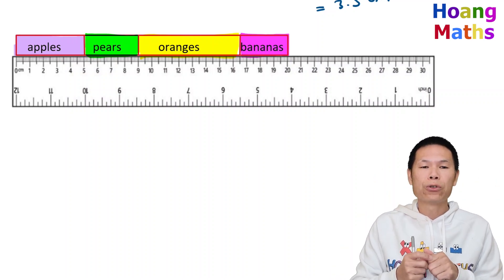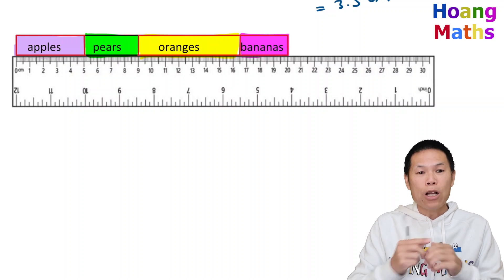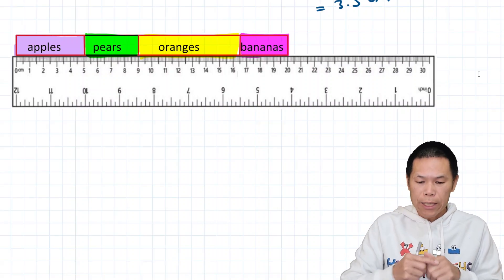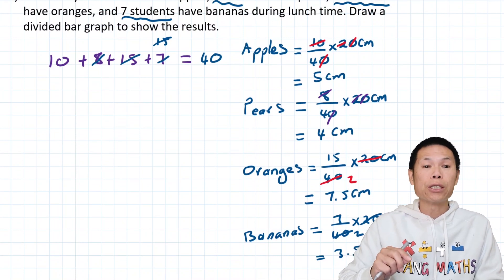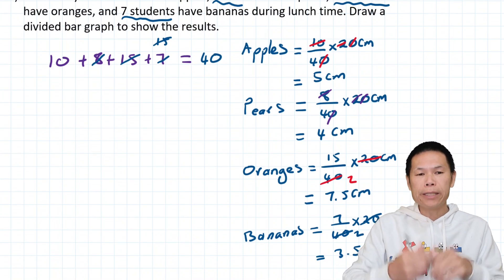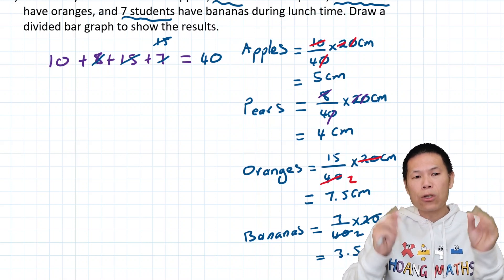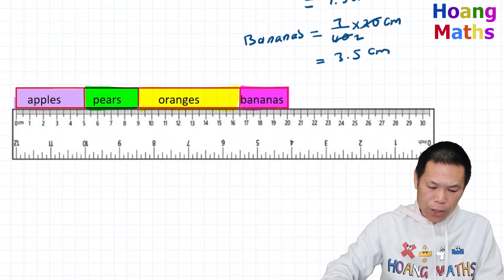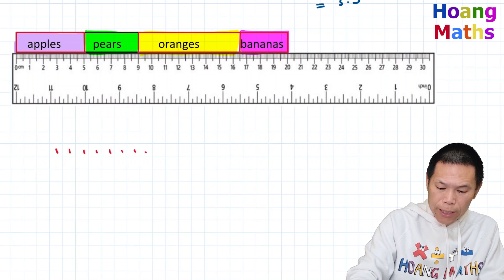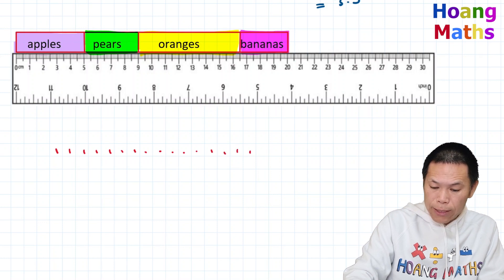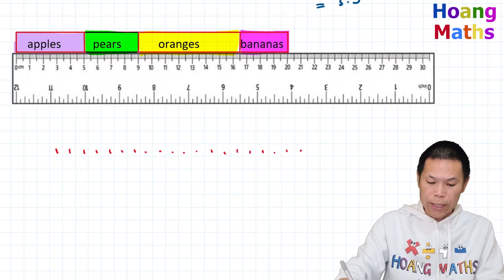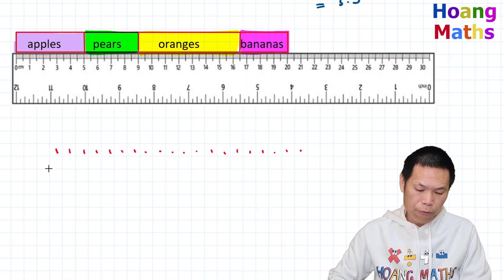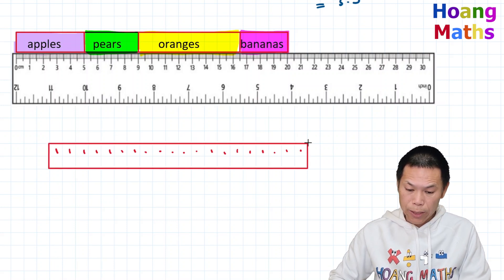That's how to draw a divided bar graph. If you have grid paper it's much easier — let me show you. We know there are 40 students altogether. Depending on the size of the grid paper, you can use 40 grids or 20 grids. I'll use 20 grids: one, two, three... all the way to twenty. There you go.